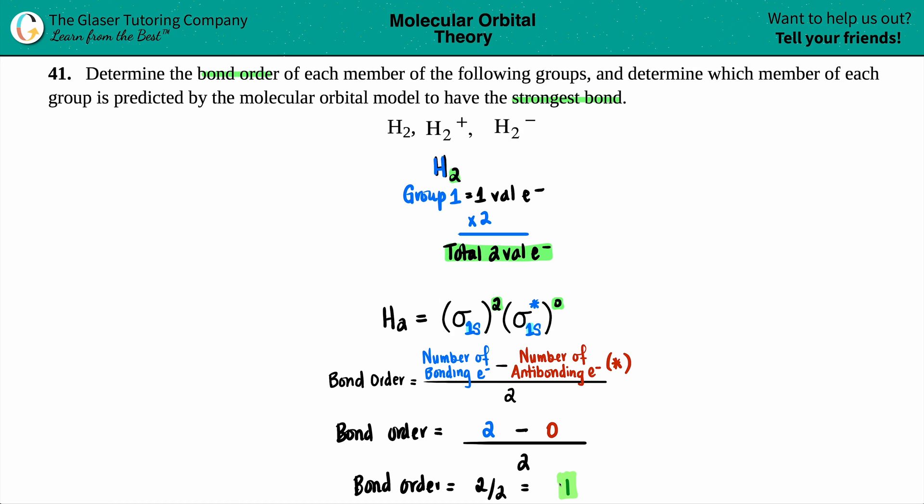Now in order to determine which one is the strongest bond, we have to find the bond order for H2 plus and H2 minus. So now I'm going to do H2 plus and then H2 minus. Now just know that the plus and the minus means that you plus one and minus one. And remember what those charges mean. Plus one means that you lost one electron. So since I already laid down the framework here, I can just copy and paste just the molecular orbital configuration.